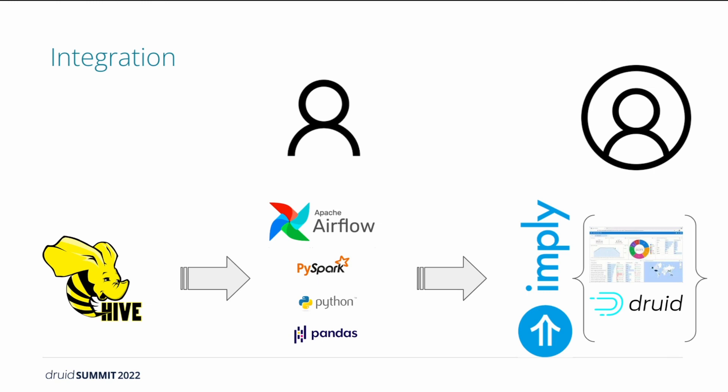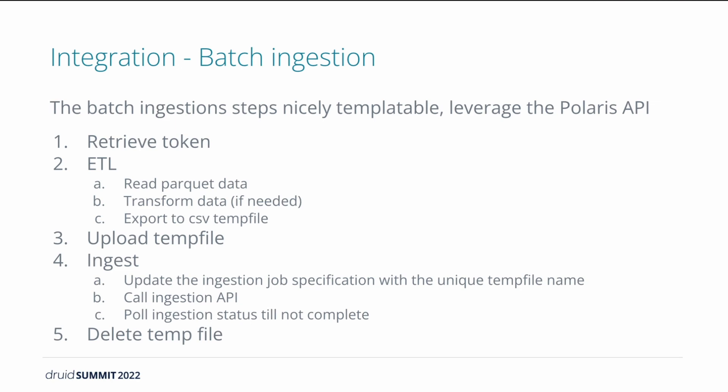We are using Airflow scheduler for the batch ingestion. The DAG is really simple — we have a data availability check task where we leverage a proprietary Zillow service, and the second task handles the whole ingestion. This task is implemented as a PySpark job. We are also using Pandas at the ETL step to manipulate the input data. Polaris completely hides the complexity of the underlying infrastructure from the developers and users, meaning we only concentrate on the analytics and the data import.